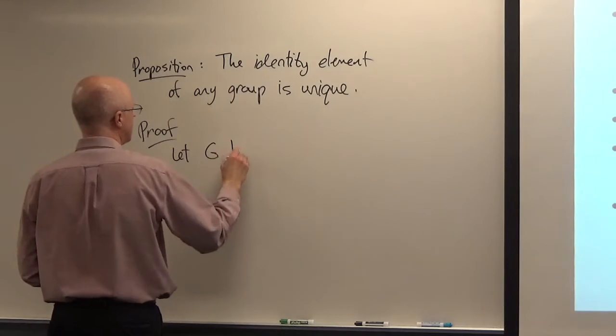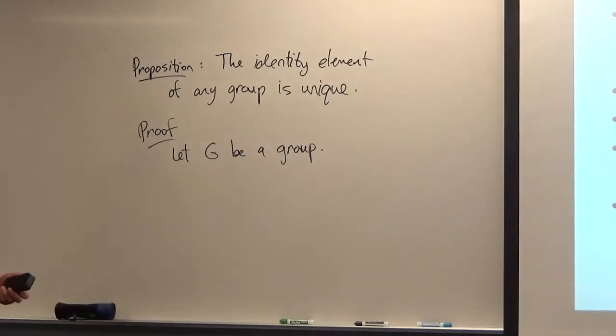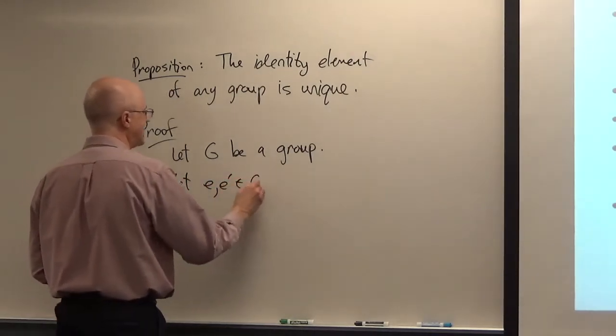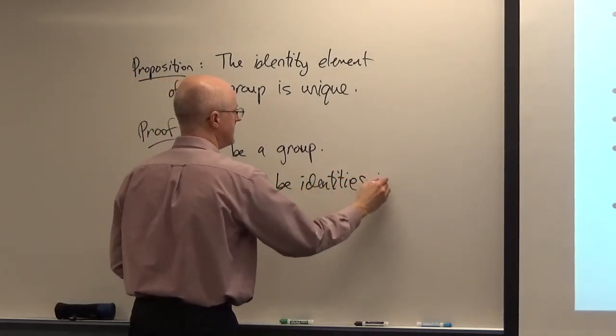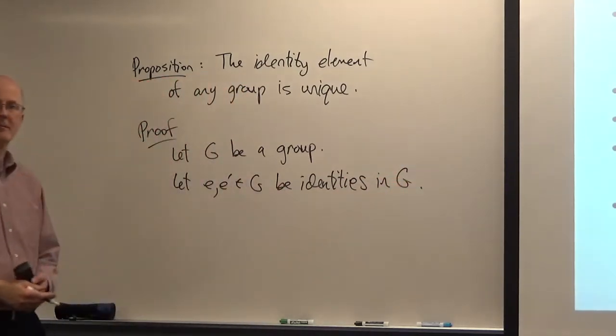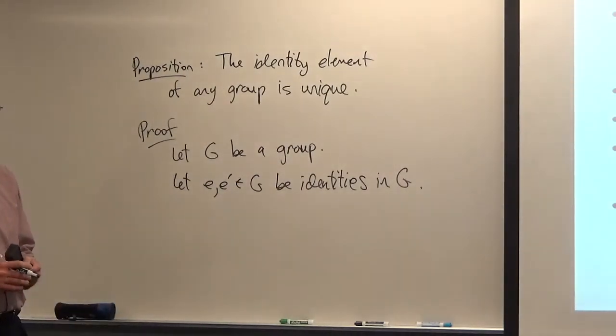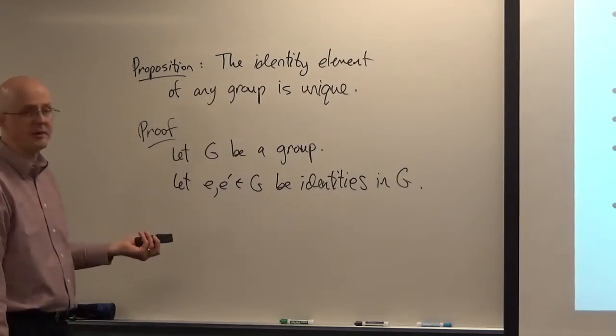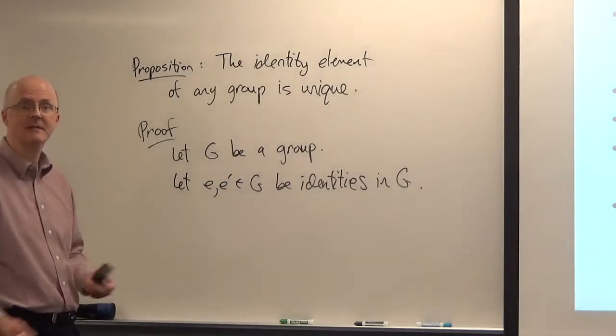I'll write it into words. The identity element of any group is unique. There's only one identity. That's not part of the definition. We don't say there exists unique E. Don't put an exclamation point there. We could have, because this proposition over there is true, but I don't need to assume it, because I can prove it. If you can prove something, then you don't need to assume it.